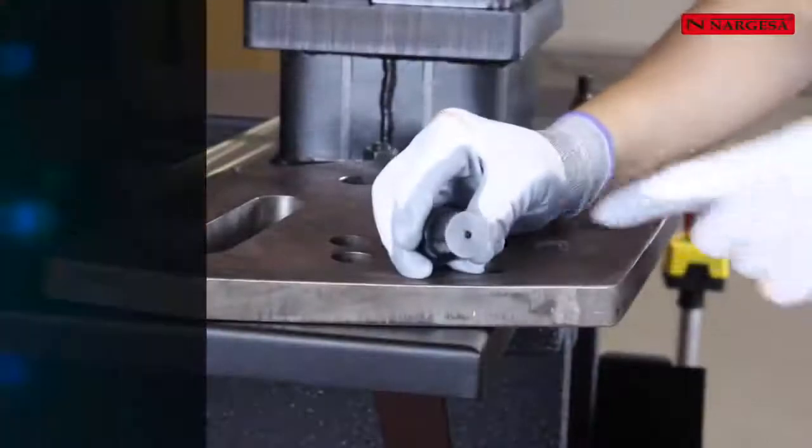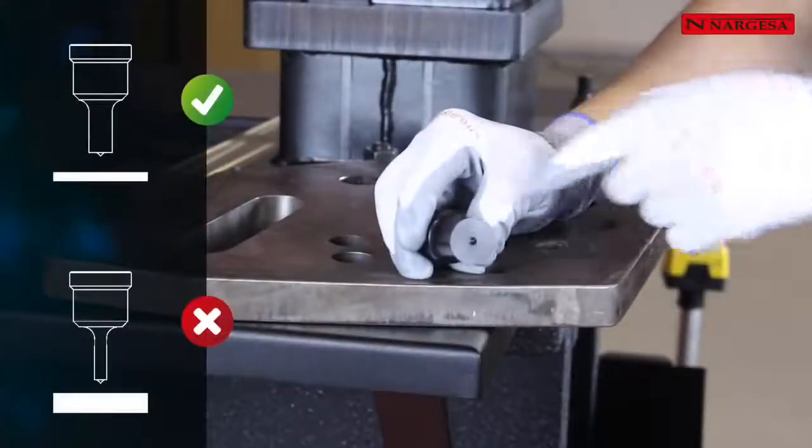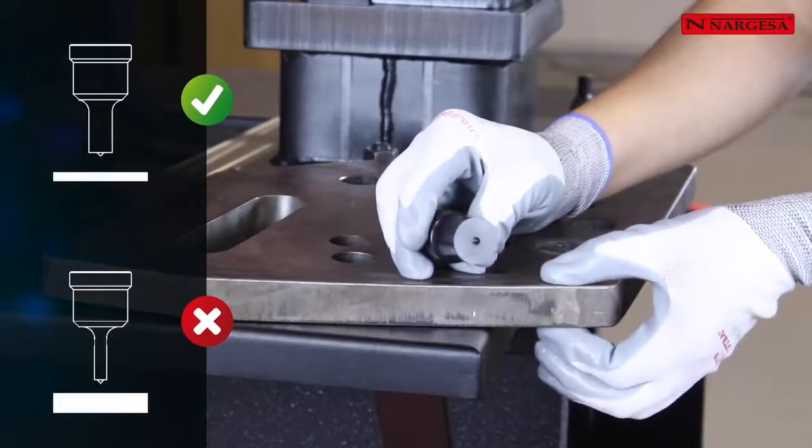The punch diameter should always be bigger than the thickness of the sheet to be punched. This is one of the main causes of breakage.